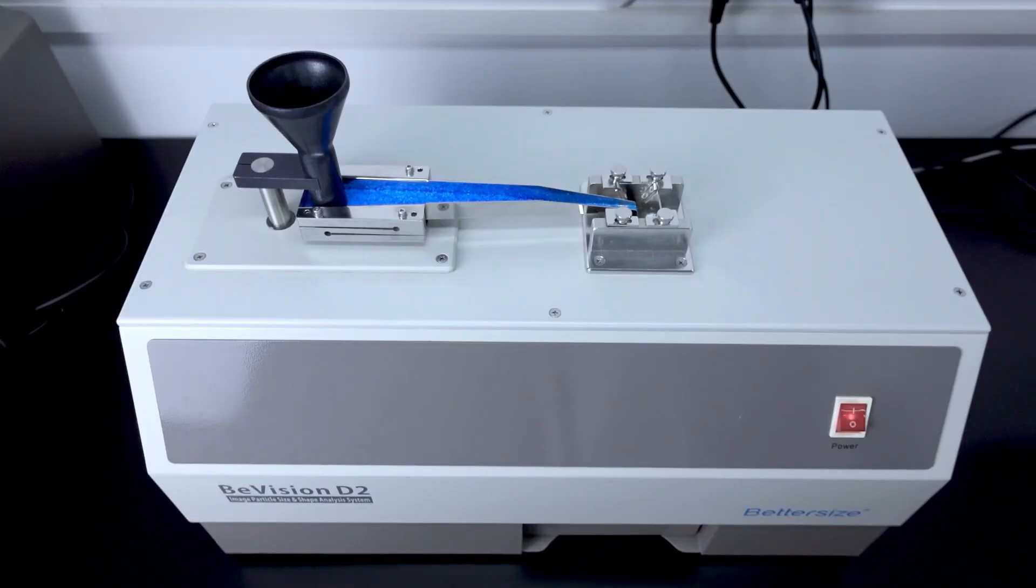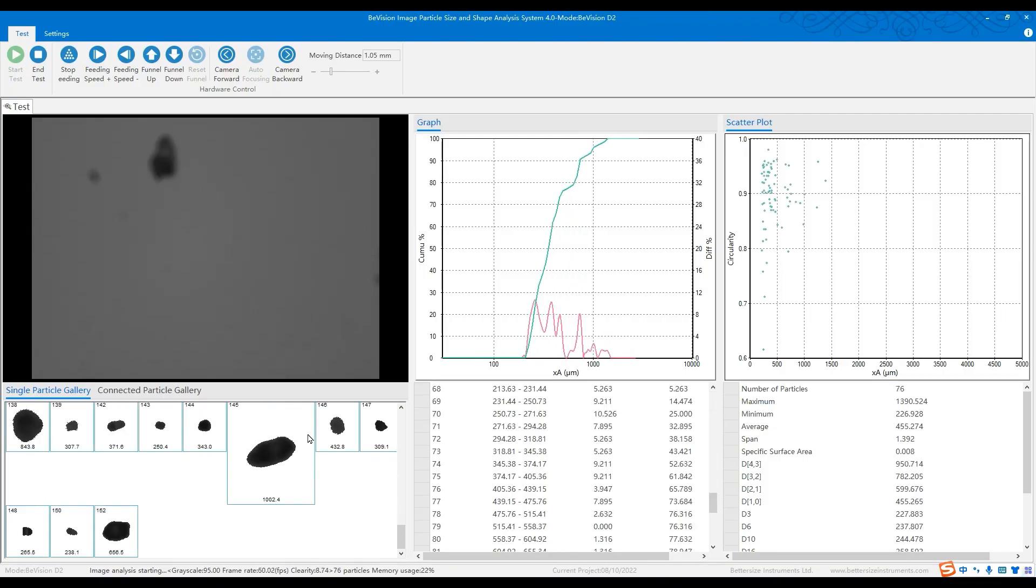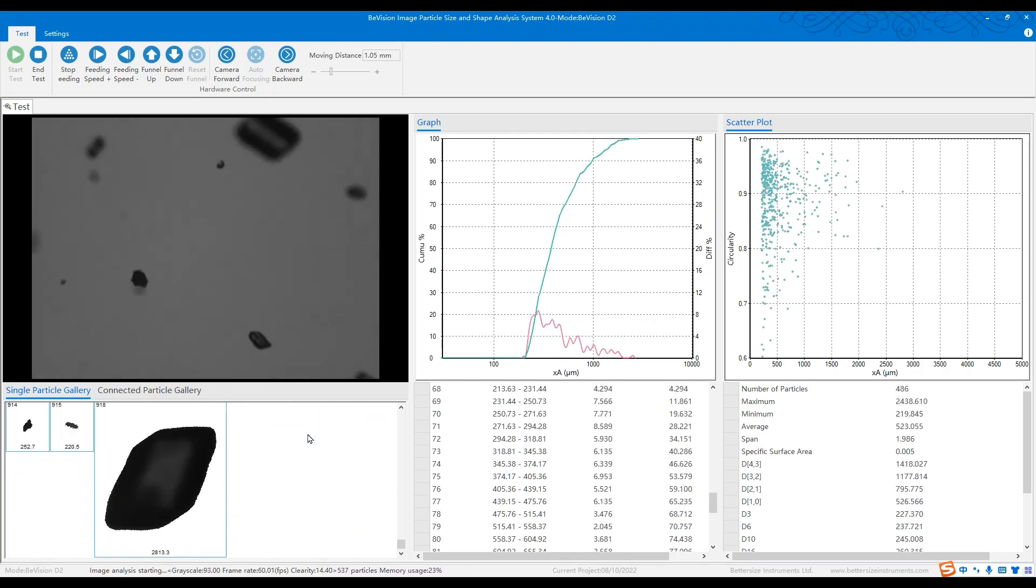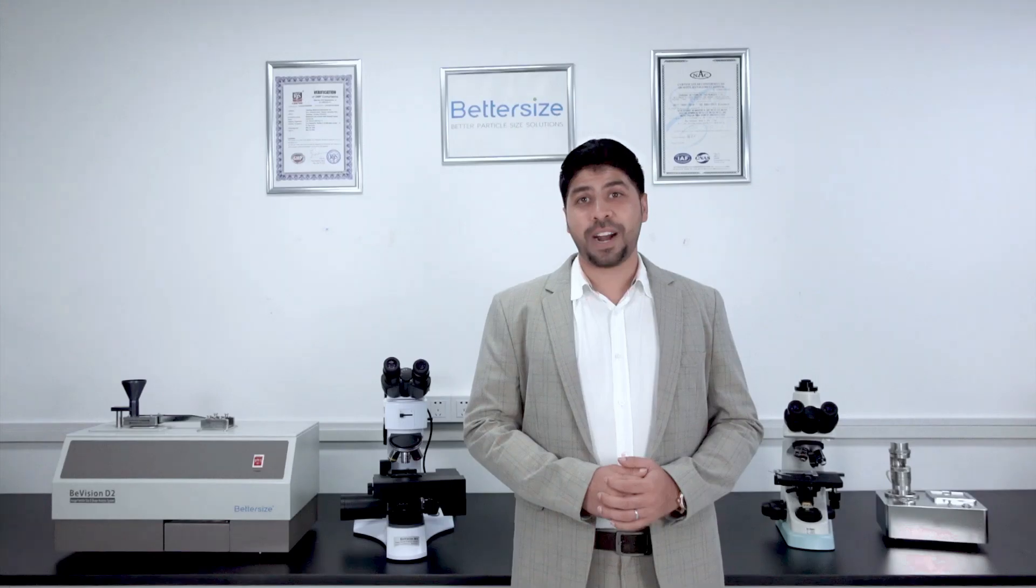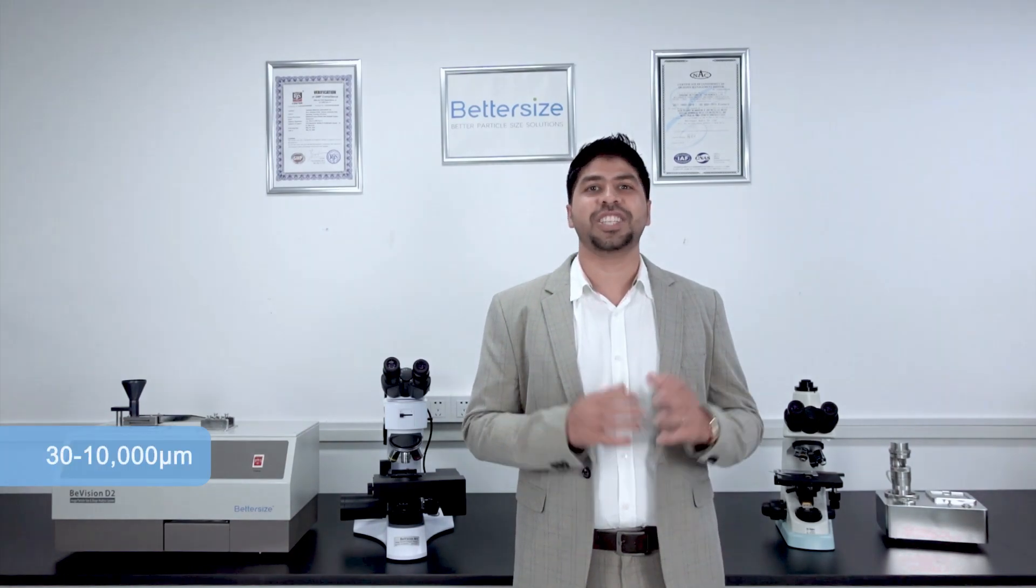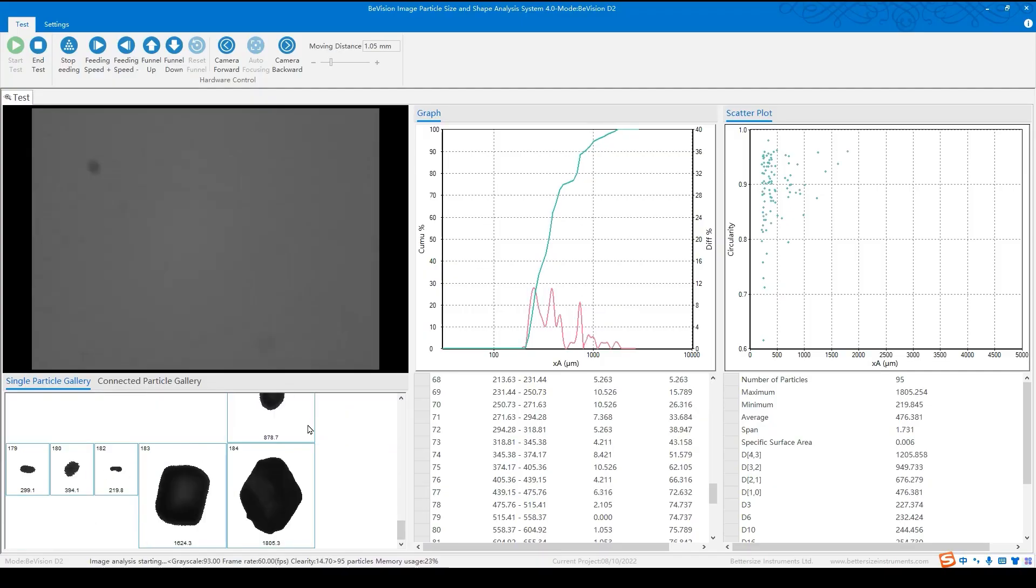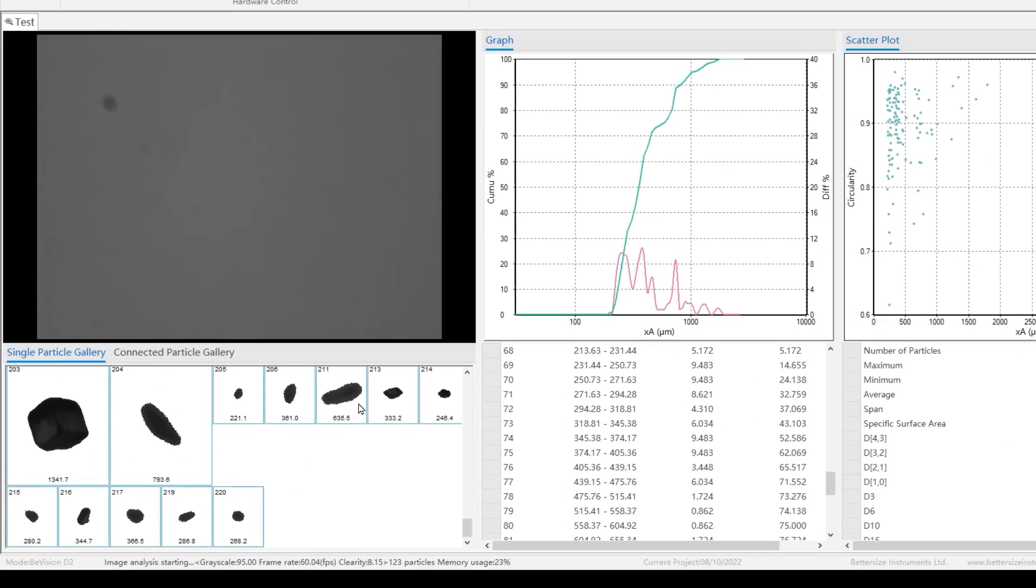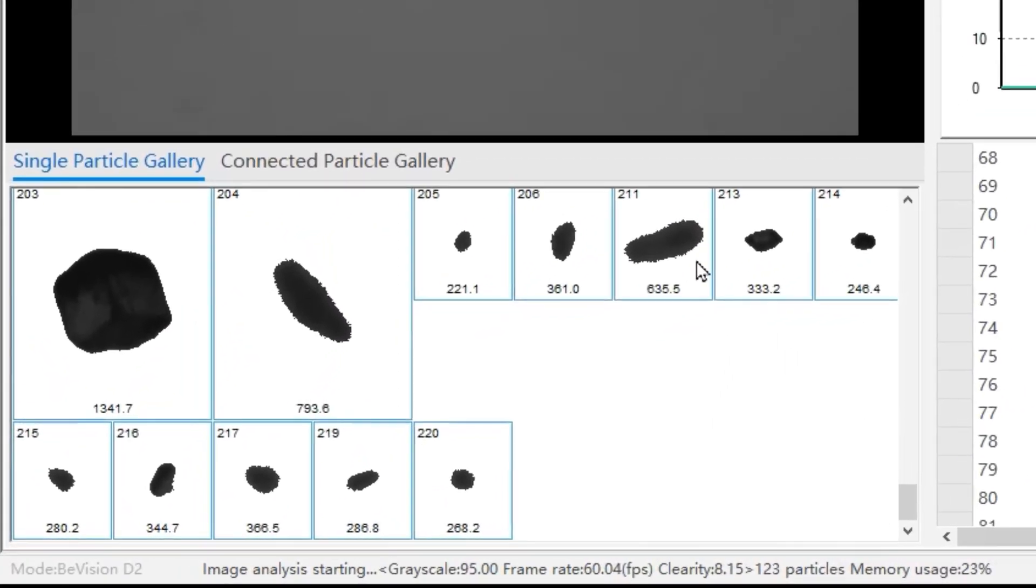The BeVision D2 features dynamic image technique to look at thousands of particles in motion, delivering statistically relevant data on particle size and shape from 30 to 10,000 microns in just a few minutes. Meanwhile, thumbnail images of each particle are saved for post-analysis weighing and screening.